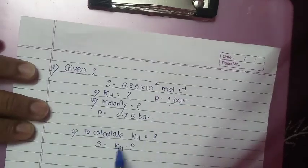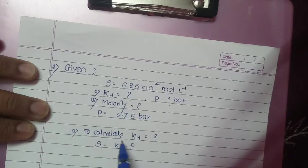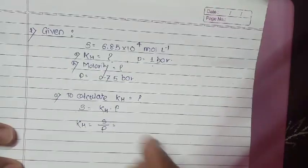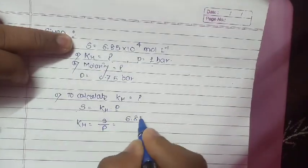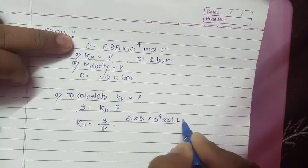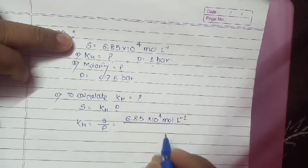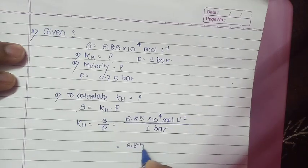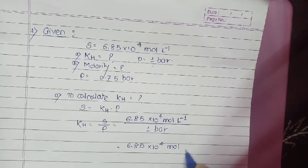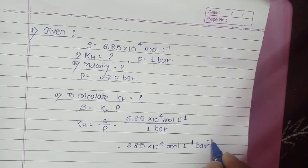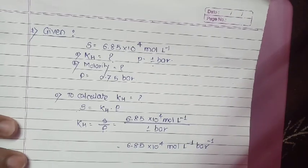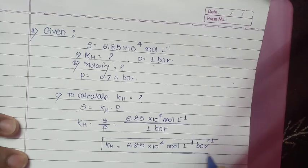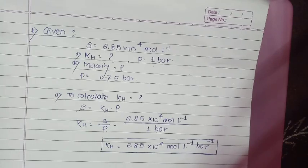P is 1 bar and solubility is 6.85×10⁻⁴ mol/L. We have to calculate KH. After rearranging: KH = S ÷ P. S is 6.85×10⁻⁴ mol/L divided by pressure 1 bar. The answer is 6.85×10⁻⁴ mol/L/bar. So KH = 6.85×10⁻⁴ mole per liter per bar.